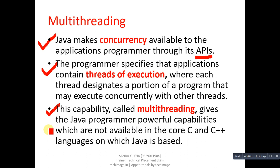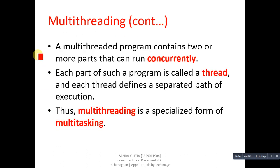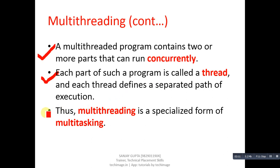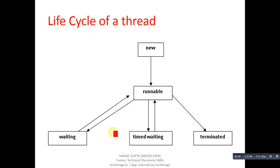Multi-threading simply means you can run more than one task or sub-program simultaneously. A multi-threaded program contains two or more parts that can run concurrently. Each part of such a program is called a thread, and each thread defines a separate path of execution. Multi-threading is a specialized form of multitasking.